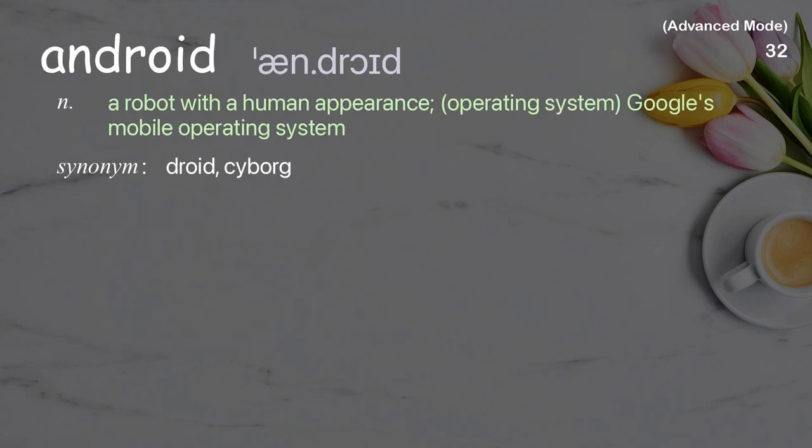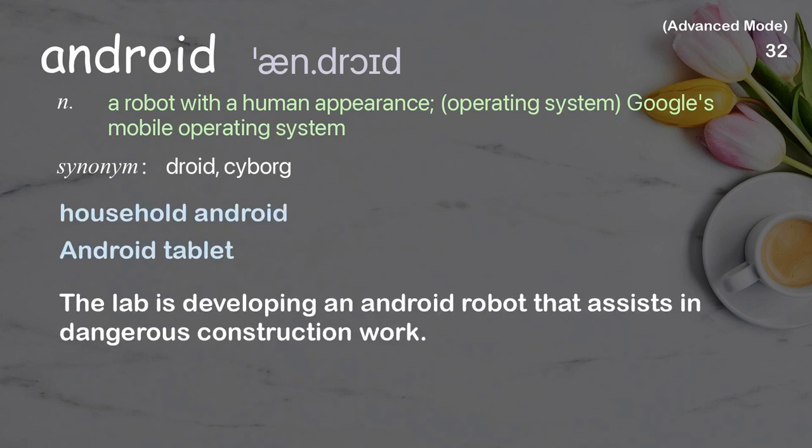Android: A robot with a human appearance; also, an operating system — Google's mobile operating system. Examples: household android, android tablet, the lab is developing an android robot that assists in dangerous construction work.